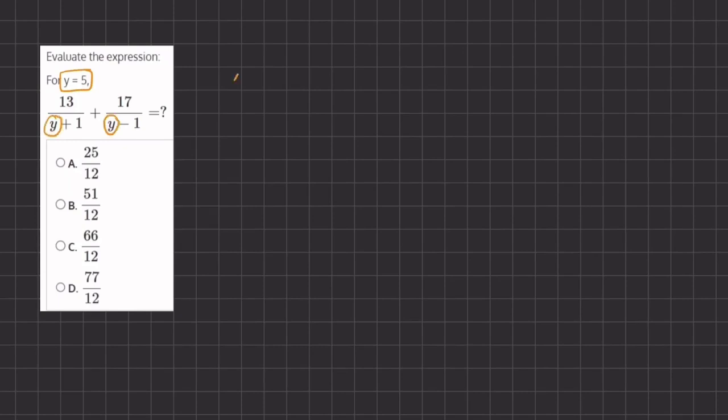So in our first fraction, we have 13 divided by y, which is 5, plus 1, plus 17 divided by y, which is 5, minus 1.